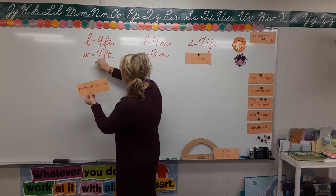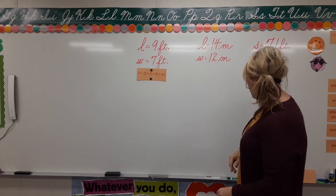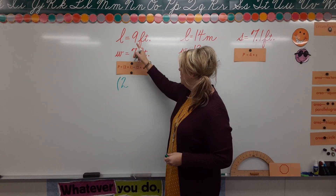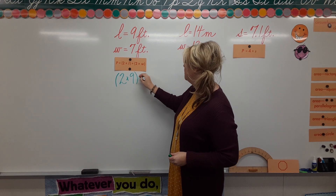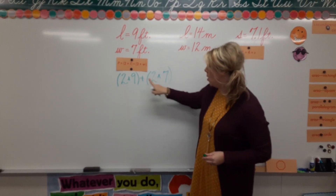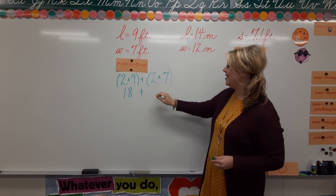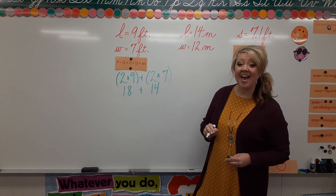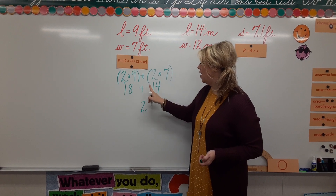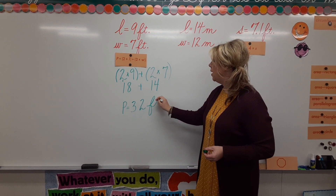Let's take a look at an example on the board. Our length is 9 feet and the width is 7 feet. So I have my formula: P equals 2 times L plus 2 times W. I will simply plug in the numbers — length 9 and width 7. Following my formula, I multiply before adding: 2 times 9 equals 18, and 2 times 7 is 14. Then we finish by adding: 18 plus 14 equals 32. Therefore, our perimeter equals 32 feet.